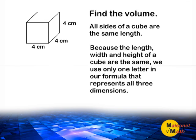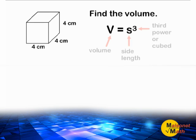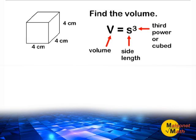So we are going to use the formula V equals s to the third power. The V represents the volume of our cube, and the s stands for the length of each side of our cube.